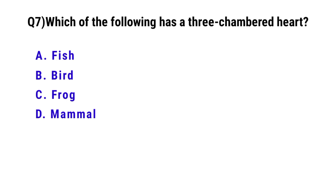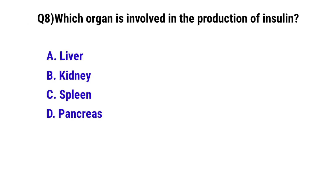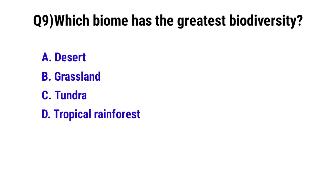Question 7: Which of the following has a three-chambered heart? The correct option is C: frog. Question 8: Which organ is involved in the production of insulin? The correct option is the pancreas. Question 9: Which biome has the greatest biodiversity? The correct option is the tropical rainforest.